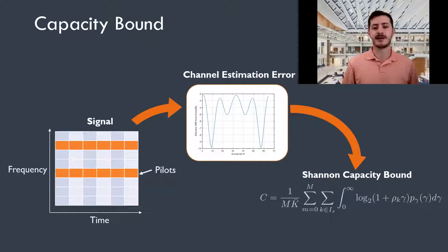And then assuming a propagation environment, we can determine the channel estimation error and then plug it into our capacity bound, the channel capacity bound for our particular fading distribution.